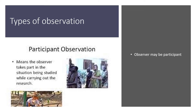The third type is observer as participant, where the role of the researcher is known. The advantage is that the researcher can record information as it occurs. However, private information may be observed that the researcher cannot report. The researcher takes part in the situation being studied while carrying out the research.